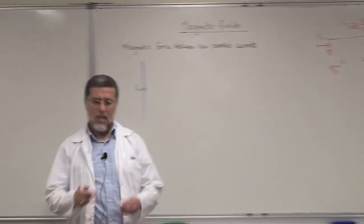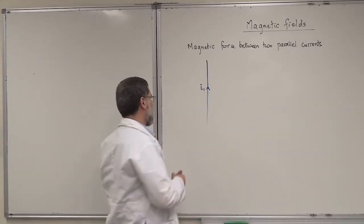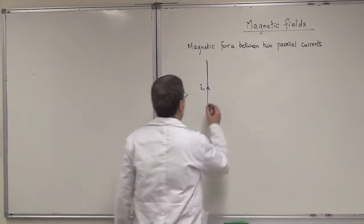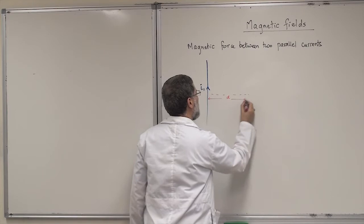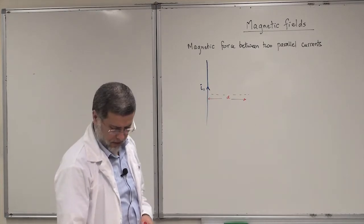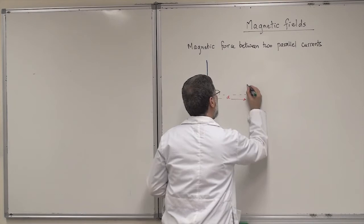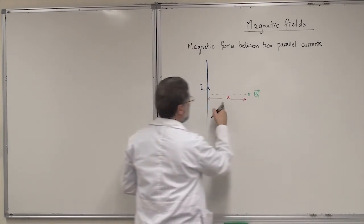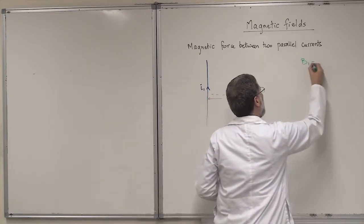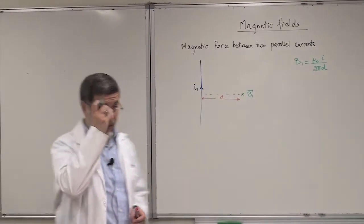This is something we have done before. Now we are going to do something similar, but with currents instead of charges. We have a current I in a wire — assume it is a very long wire — and at a distance d from the wire, there will be a magnetic field. Using the right-hand rule, you can find the direction of that magnetic field. I'll call it B1. The magnitude of B1 is mu-zero times I over 2 pi d — that's the magnetic field due to a very long wire.